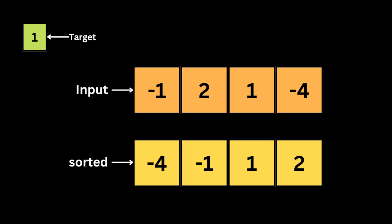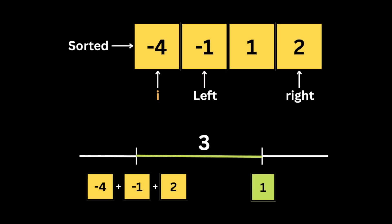Let's say we have this input list and an integer target equal to one. The first thing we're going to do is sort the array, so after sorting the smallest numbers are at the left and the larger numbers are at the right. We loop throughout the array using the index of the for loop as a pointer, then initialize a left pointer at the number after the i index and a right pointer at the last number in the array.